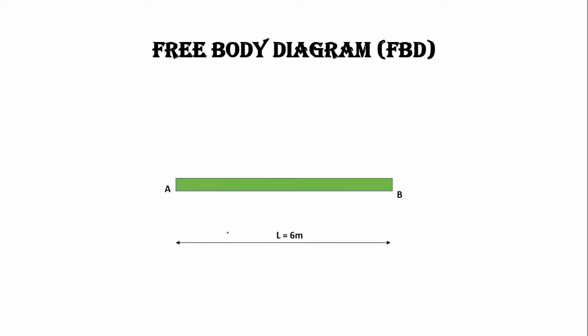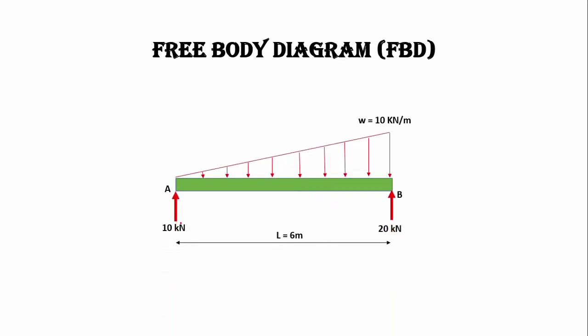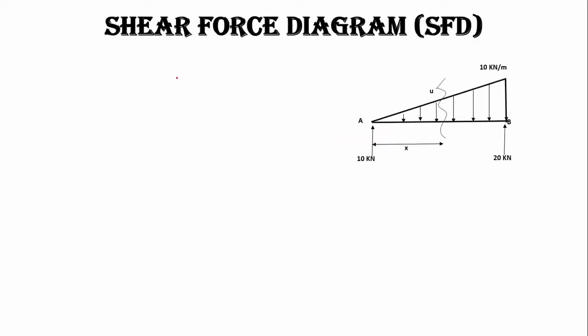Now let's draw the free body diagram. Here you can see a beam AB of 6 meter length with UVL of 10 kilonewton per meter acting on it, support reaction at A of 10 kilonewtons, and at B of 20 kilonewtons. Next we will draw the shear force diagram using the shear force equation.